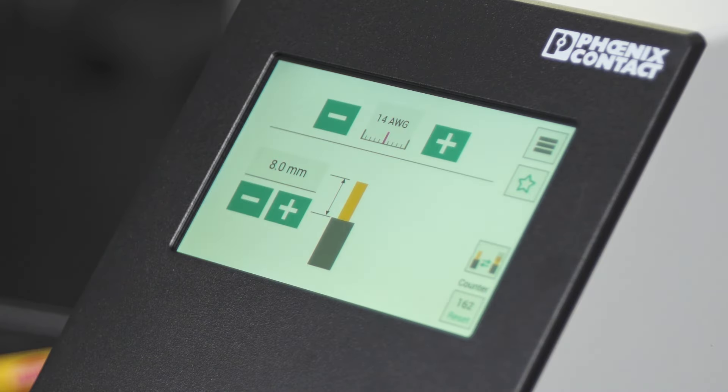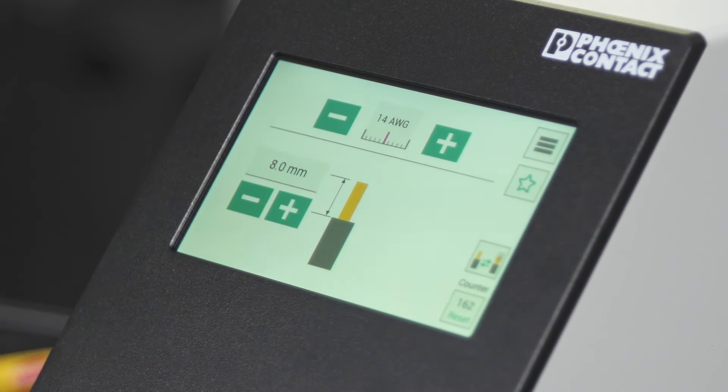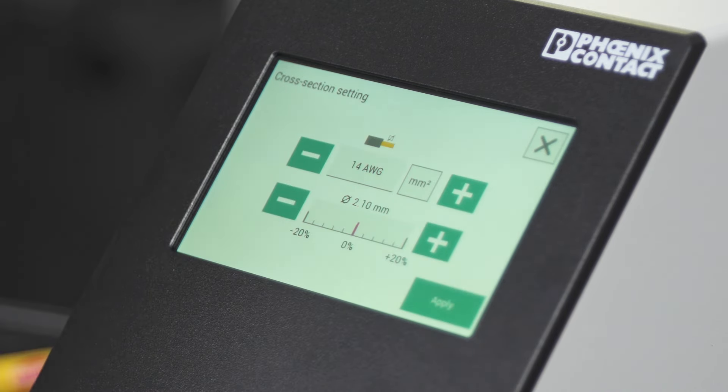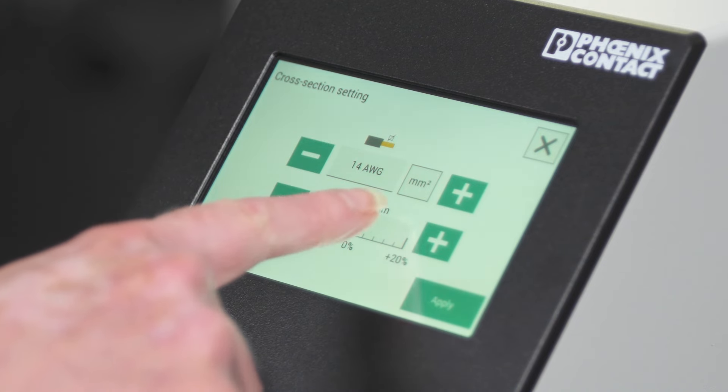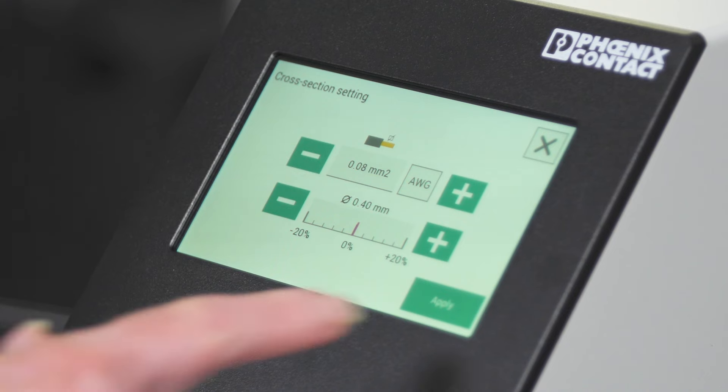Using the touchscreen, select the wire cross-section by using your plus and minus keys. You can change from millimeter squared to AWG by touching on the cross-section, then select your desired cross-section here and touch apply.